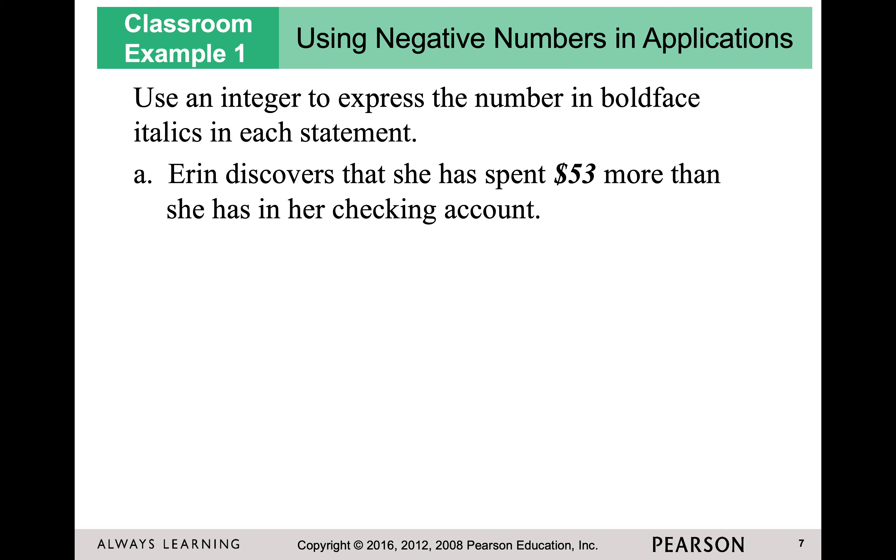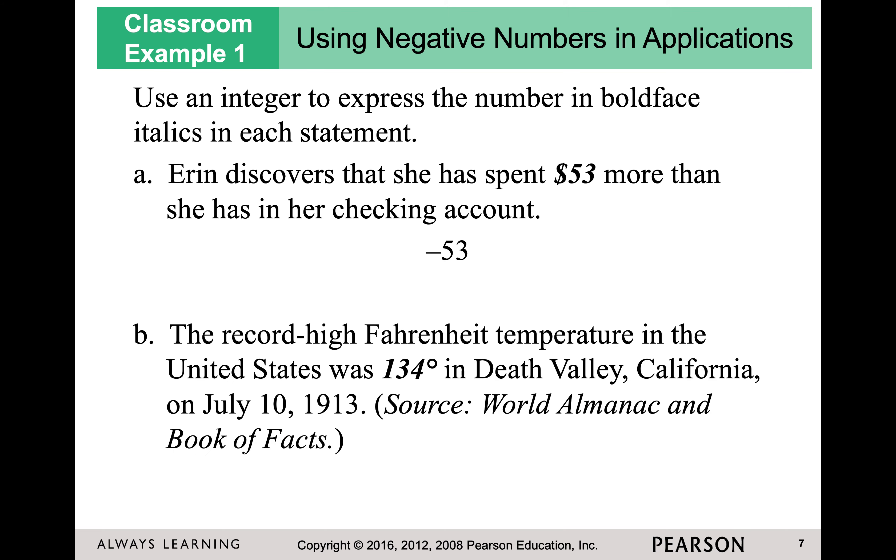Let's use an integer to start representing things. Erin discovers she spent $53 more than she had in her checking account. Well, we all kind of know what happens there. She is in trouble. She has negative $53. Financial representations is the best way to look at it. The record high Fahrenheit temperature in the United States was 134 degrees. Is that positive or negative? It's going to be positive. It's higher than zero.